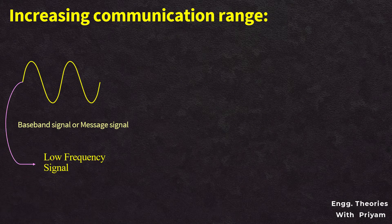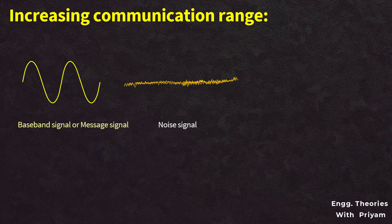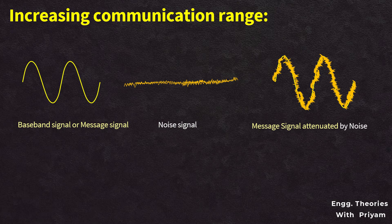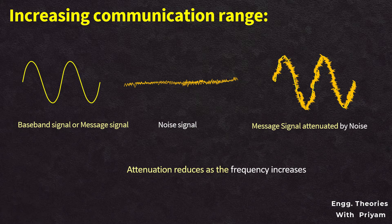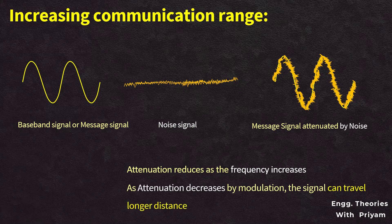Increasing the frequency range: the frequency of the baseband or message signal is low, and low-frequency signals cannot travel long distances because they are heavily attenuated by noise. The attenuation reduces with an increase in frequency. The modulation process increases the frequency of the transmitted signal, allowing it to travel over long distances without being attenuated by noise — thus the range of communication is increased.